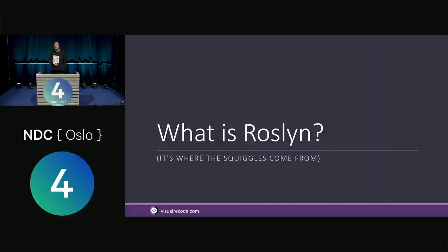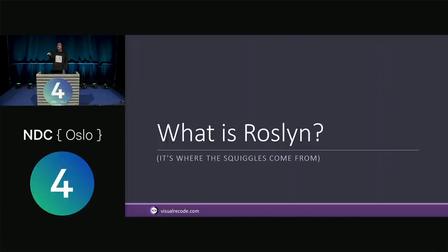Fundamentally, the thing Roslyn is most often used for is writing analyzers, which either install into Visual Studio or you can reference them as a NuGet package in your project. It then adds squiggles under lines, and if you're really lucky, it adds the fix for that as well. We'll take a look at that later on.